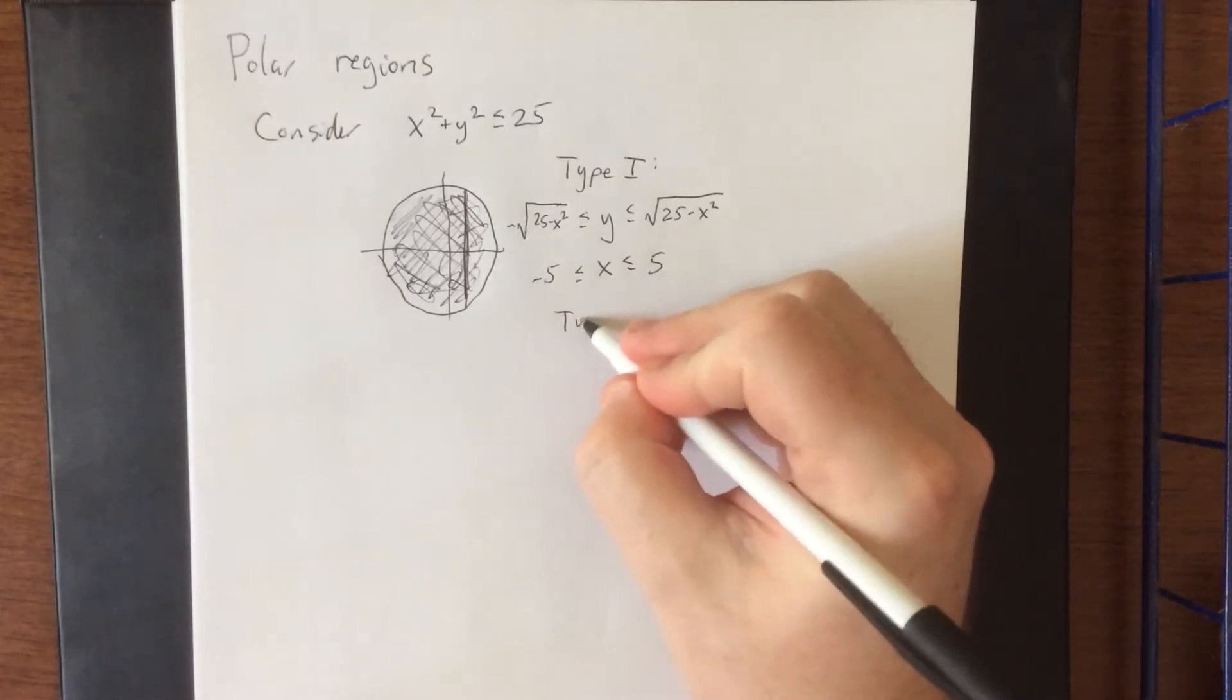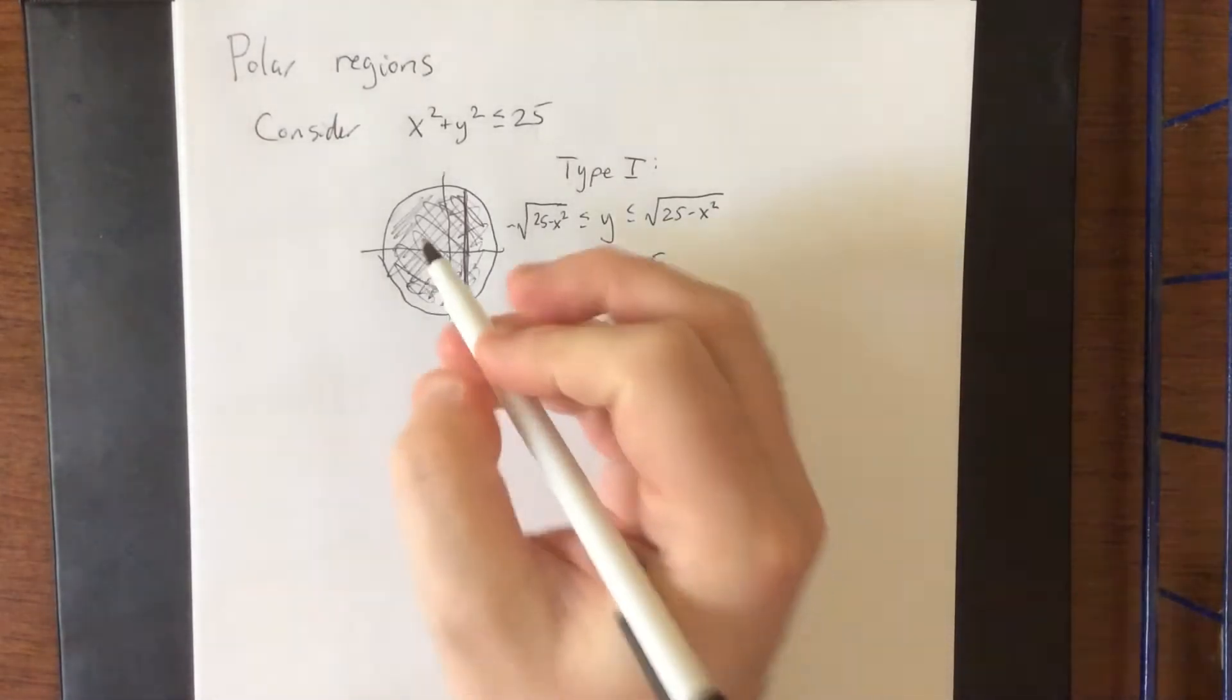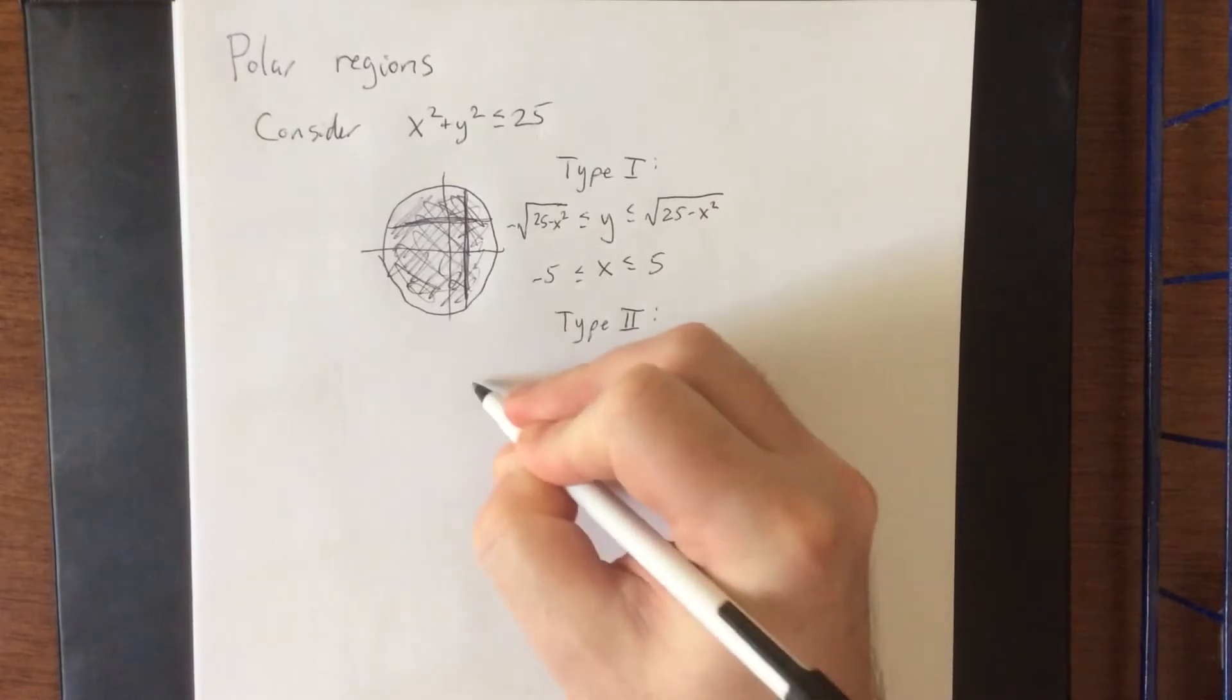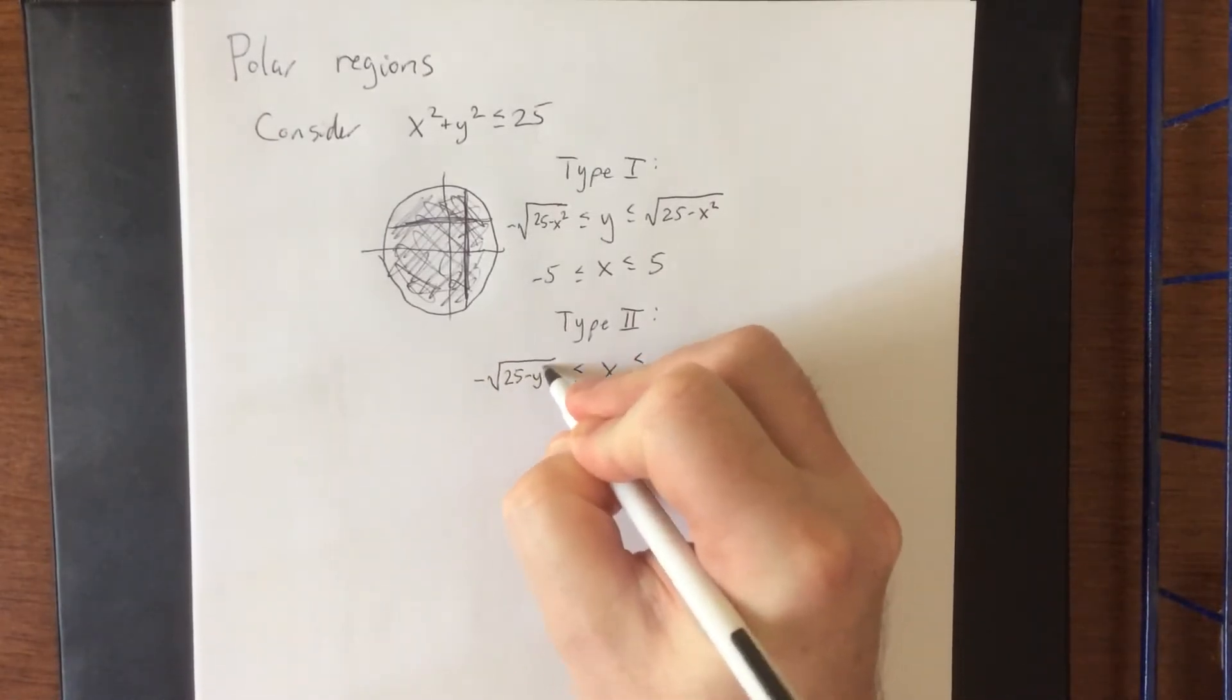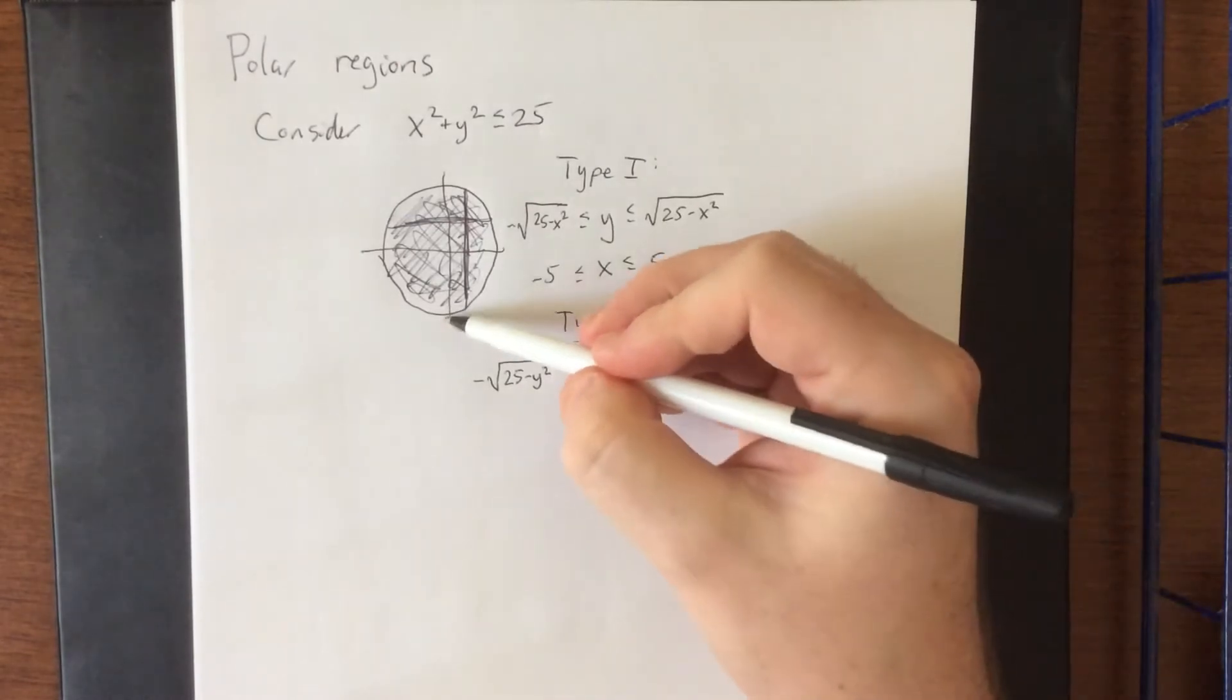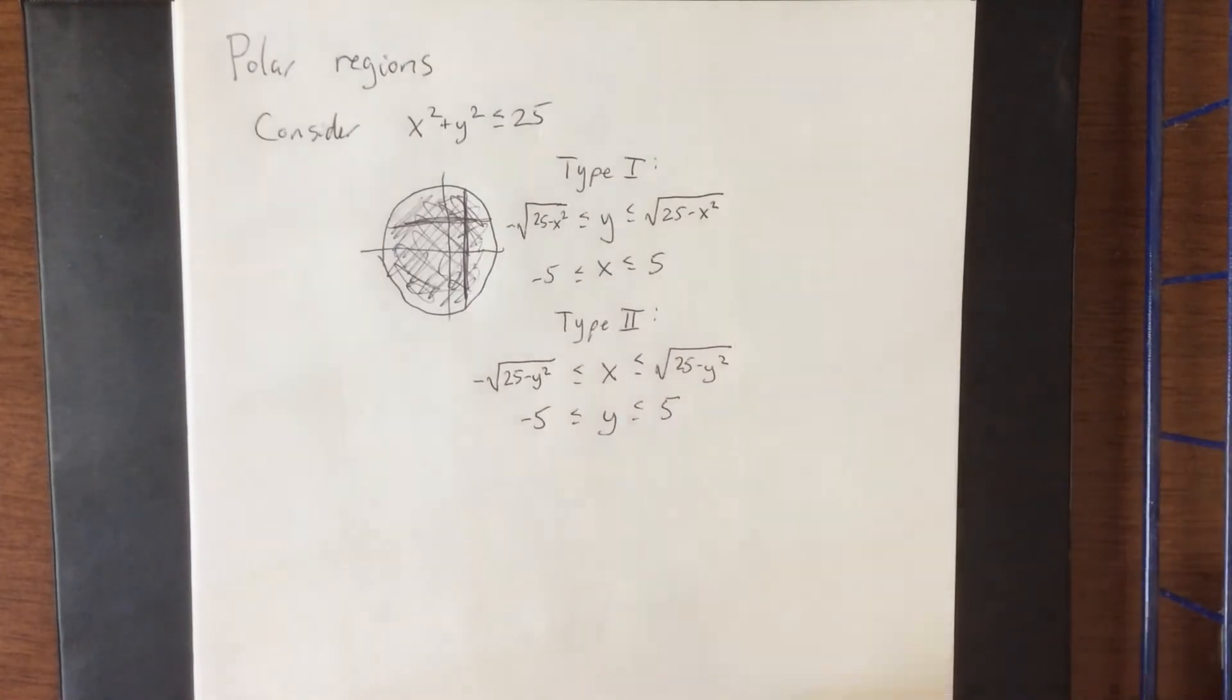If we wanted to go type 2 with this region, we could certainly do that as well. But then we'd be going side to side, and we would start this off by solving for x. Well, x is bounded on the left by the left half of the circle, so that would be the negative square root of 25 minus y squared. And the right would be the positive square root of 25 minus y squared. y would then go from a constant to a constant, which, similar to the other one, would be from negative 5 to positive 5.